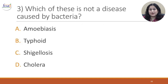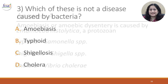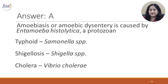Question 3: Which of these is not a disease caused by bacteria? A. Amoebiasis. B. Typhoid. C. Shigellosis. D. Cholera. The correct answer is A. Amoebiasis or amoebic dysentery is caused by Entamoeba histolytica, which is a protozoa. Typhoid is caused by Salmonella species, Shigellosis by Shigella species and Cholera by Vibrio cholerae, which are all bacteria.